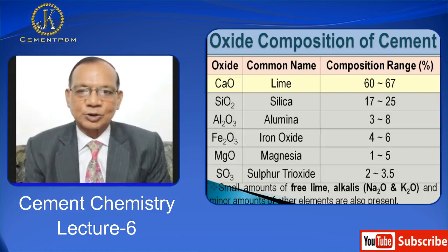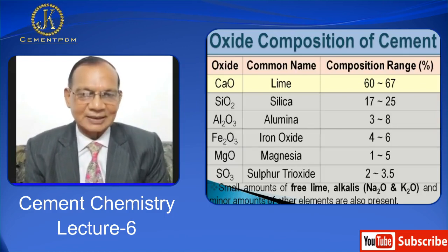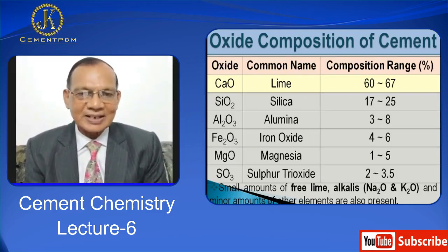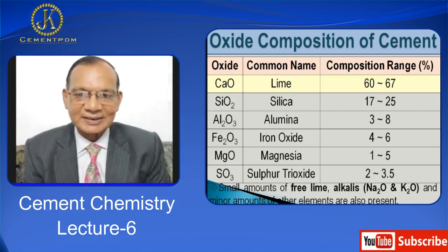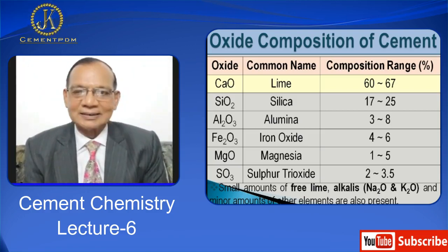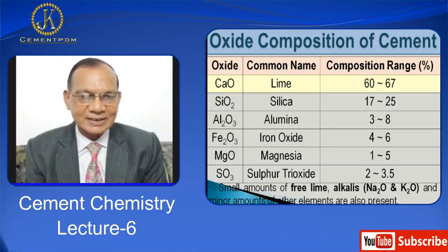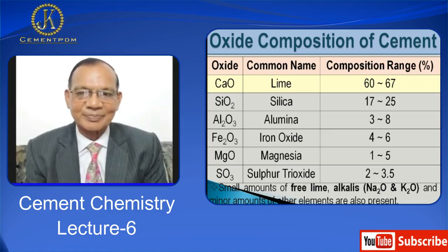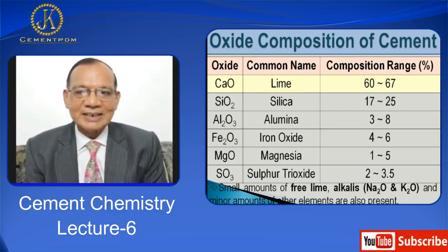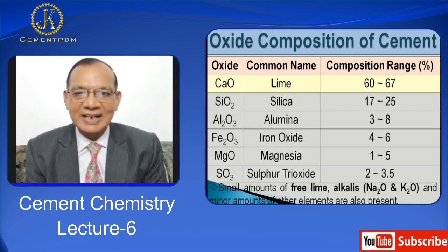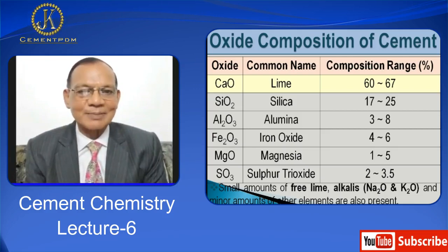Now I will discuss in detail the oxide composition of cement. Starting with lime, that is CaO, composition ranges from 60 to 67%. Silica content ranges from 17 to 25%. Alumina Al2O3 ranges from 3 to 8%. Iron oxide Fe2O3 ranges from 4 to 6%. Magnesia MgO ranges from 1 to 5%. Sulphur trioxide SO3 ranges from 2 to 3.5%. In addition, small amounts of free lime, alkalis Na2O and K2O, and minor amounts of other elements are also present.